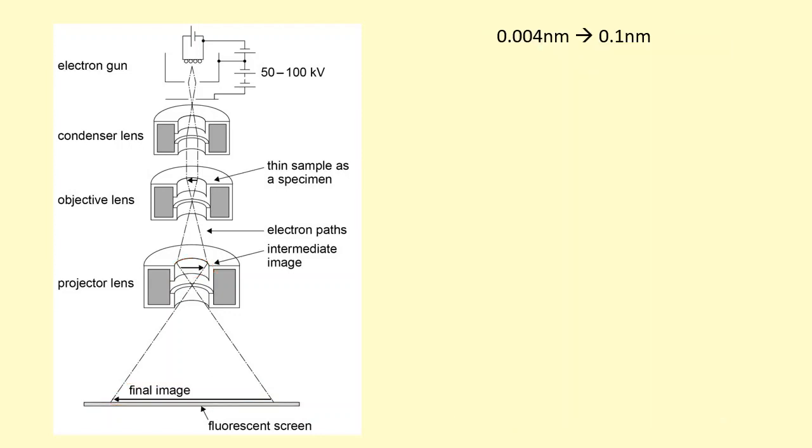If you calculate the de Broglie wavelength for an electron accelerated at 100 kilovolts you get 0.004 nanometers. However, the resolution is much lower. Why is this? Well, one of the limitations is called lens aberration.